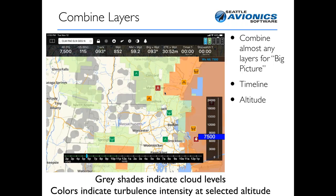You can also combine layers together because it's FlyQ. A lot of EFB apps only let you pick one from various categories. In FlyQ, you can mix and match almost anything. By combining the turbulence layer and cloud levels at the same time, you get a really good sense of where you may or may not want to fly. You don't have to toggle between them. And since these layers relate to both a timeline and an altitude slider, you can modify the altitude slider and move the timeline to see what things look like one, two, or three hours into the flight.